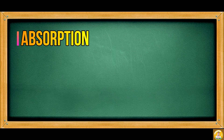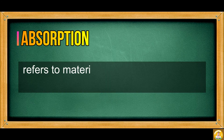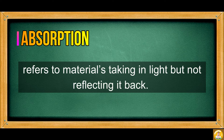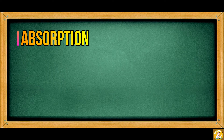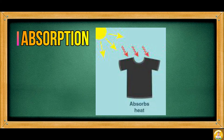Absorption refers to materials taking in light but not reflecting it back. For example, when light strikes a black surface, it is absorbed by the surface and nothing is reflected.